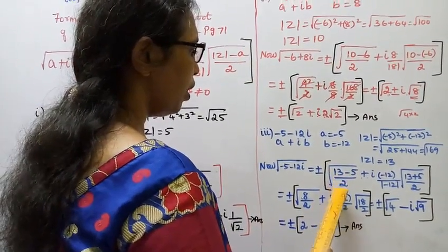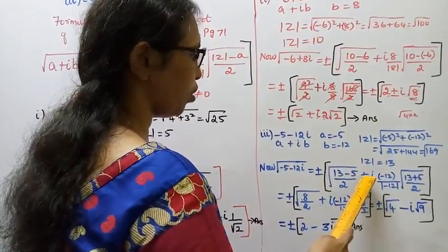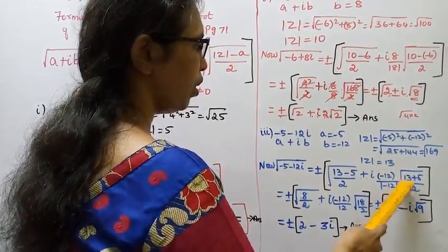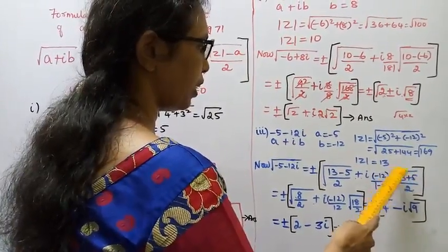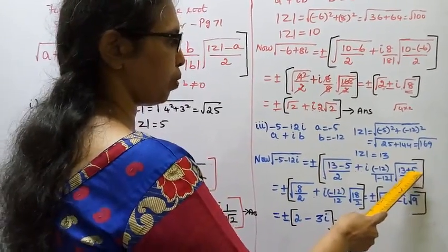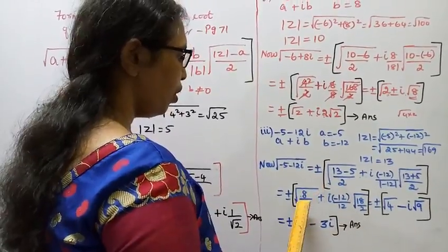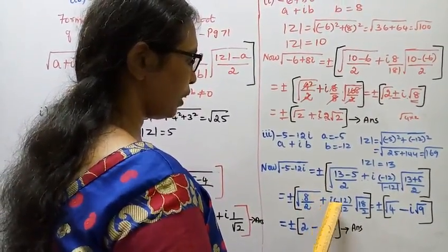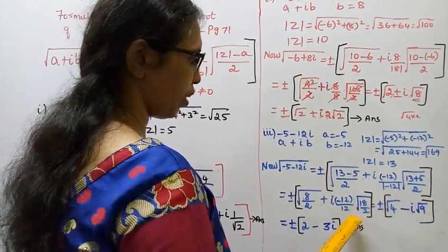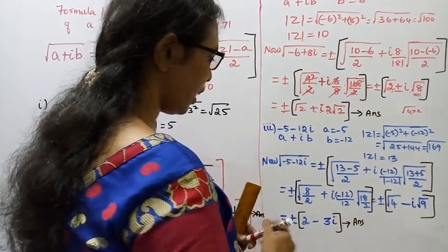Therefore, square root of (minus 5 minus 12i) equals plus or minus: root of (mod z plus a) by 2, that is (13 plus minus 5) by 2, which is (13 minus 5) by 2, equals 8 by 2. Plus i times b by mod b, that is minus 12 by mod of minus 12, which is positive 12, into root of (mod z minus a) by 2, which is (13 minus into minus 5), that is 13 plus 5.